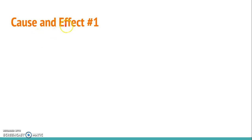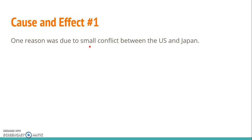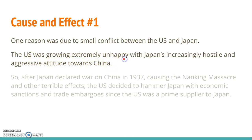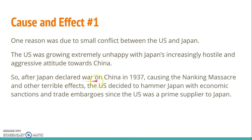One of the minor but important causes was a small conflict between the U.S. and Japan. During the late 1930s, Japan was really hostile and aggressive towards China, and the U.S. didn't really like that. Japan declared war on China in 1937, which caused the Nanjing Massacre and other terrible effects — basically a lot of bloodshed and deaths.